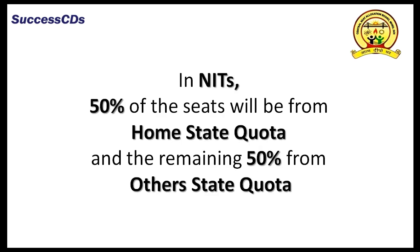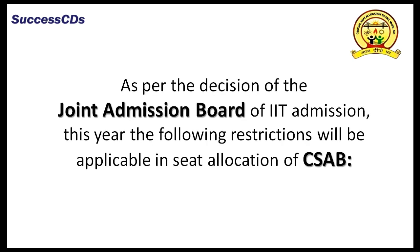In NITs, 50% of the seats will be from home state quota and the remaining 50% from other state quota, i.e., all other states and UTs except the home state. As per the decision of the apex body, i.e., the Joint Admission Board of IIT, the following restrictions will be applicable in seat allocation of CSAB.